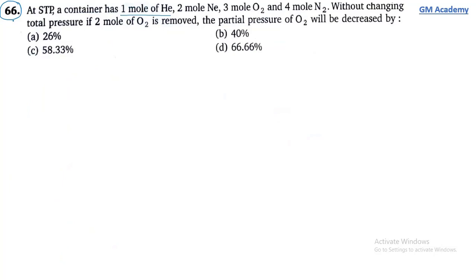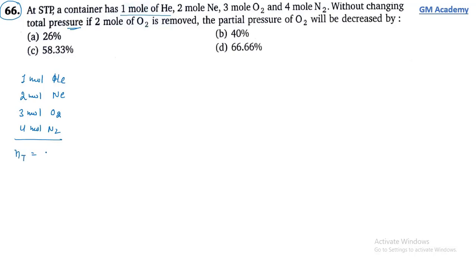Question 66: At STP a container has 1 mol helium, 2 mol neon, 3 mol O₂, and 4 mol N₂. Total moles = 10 mol. Without changing total pressure, if 2 mol of O₂ is removed, by what percentage does partial pressure of O₂ decrease?